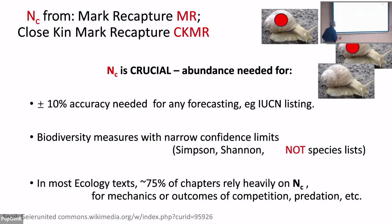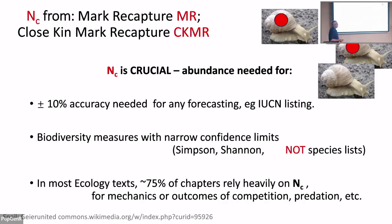Let's go back to old methods from the 1950s: mark-recapture. You catch a hundred snails, put a nail polish dot on each of them, release them, catch another hundred — fifty of them have got a dot, so the population size must be 200. There's a mathematical element called the hypergeometric distribution. There's also a more recently proposed method called close-kin mark-recapture, where instead of recapturing individuals you take one sample, look at adults and juveniles with the same genomes, and treat that as recapturing the genome.